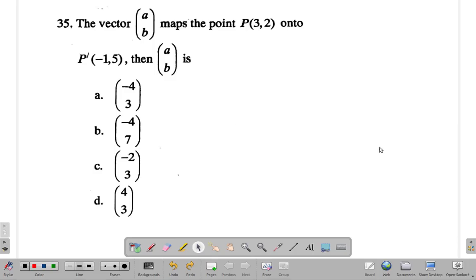Question 35, take one minute to do this, try to do it within one minute and come back and let's see what you get. All right, now the vector AB maps the point (3,2) onto (-1,5), then AB is...